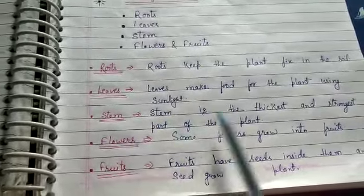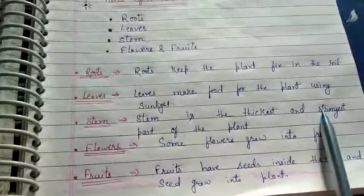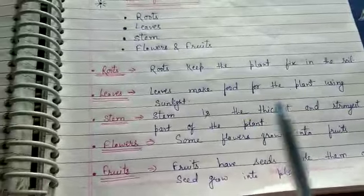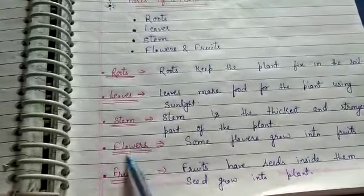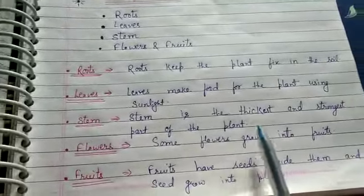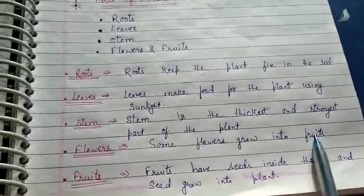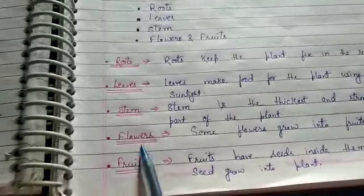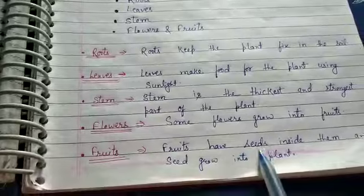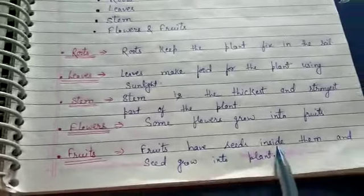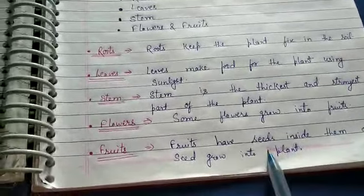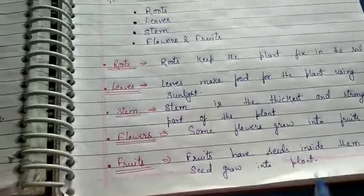Stem is the thickest and strongest part of the plant. Flowers — some flowers grow into fruits. And fruits have seeds inside them, and seeds grow into new plants.